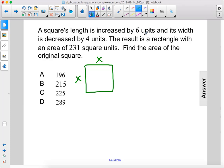But now we're going to increase the length by 6 units and decrease the width by 4 units, and we get something that looks like this. So this is going to be x plus 6 and this length here will be x minus 4.